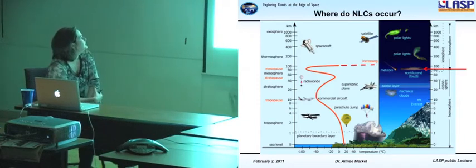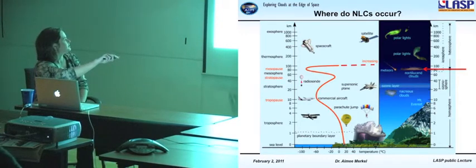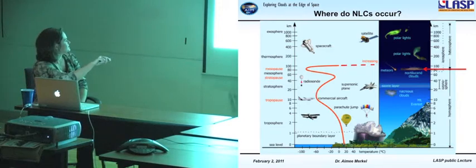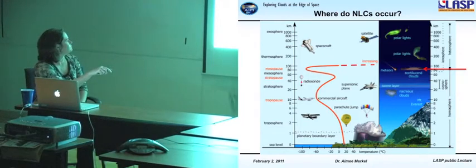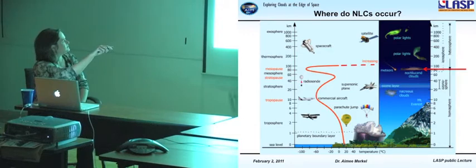So NLCs occur 50 miles above the Earth's surface, which is about 80 kilometers, 83 kilometers. On the y-axis here is altitude in kilometers. On the x-axis is temperature pertaining to this temperature profile. I like this schematic because it shows relative activities going on in the atmosphere, both human and natural. It gives the altitude of where clouds that we see all the time are. And in reference, here's where noctilucent clouds occur. You can see where Mount Everest is, about 8 kilometers high. So noctilucent clouds occur 10 times higher than the peak of Mount Everest, and they're right on the edge of space.